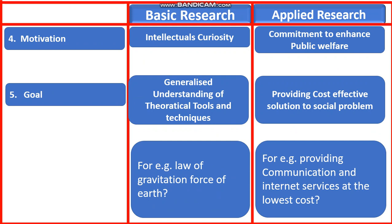The main goal of basic research is to generalize understanding of theoretical tools and techniques. For example, Newton invented the law of gravitational force on earth — whether it is applicable equally in all countries or not. When we are trying to answer such questions, we are trying to generalize the understanding, and this is the main goal of basic research. Whereas the main goal of applied research is to provide cost-effective solutions to social problems — for example, providing communication and internet services at the lowest cost in society.